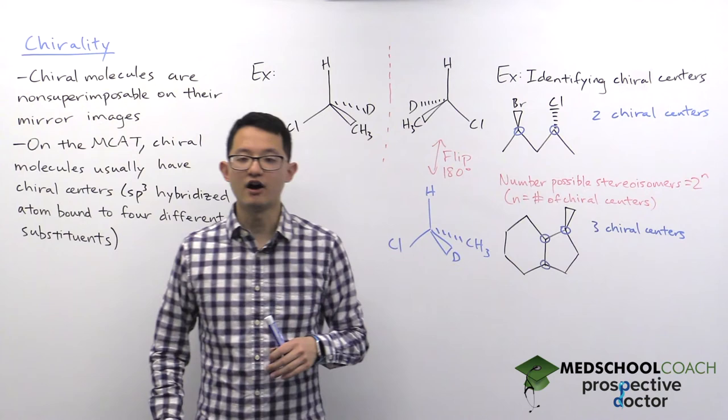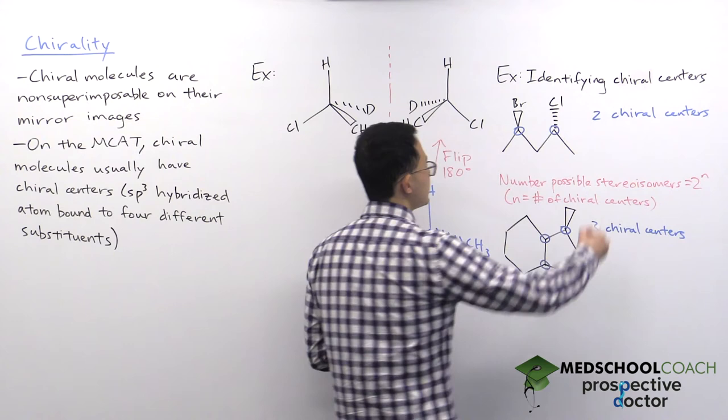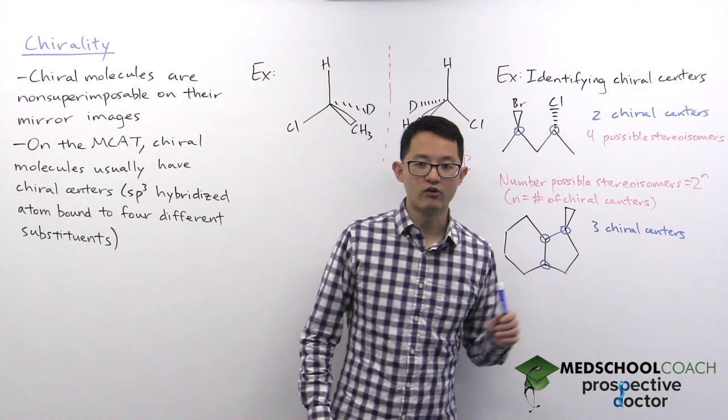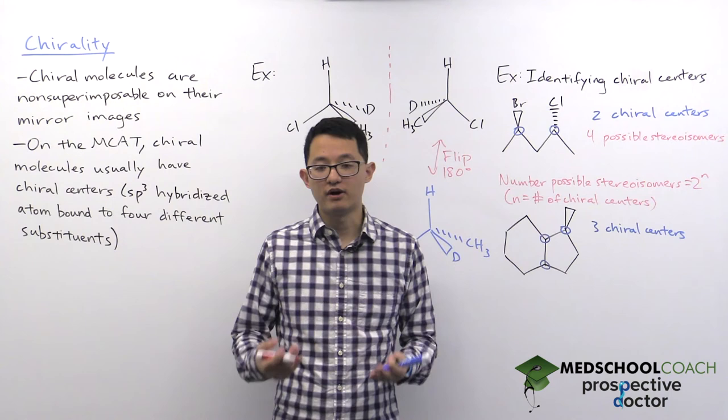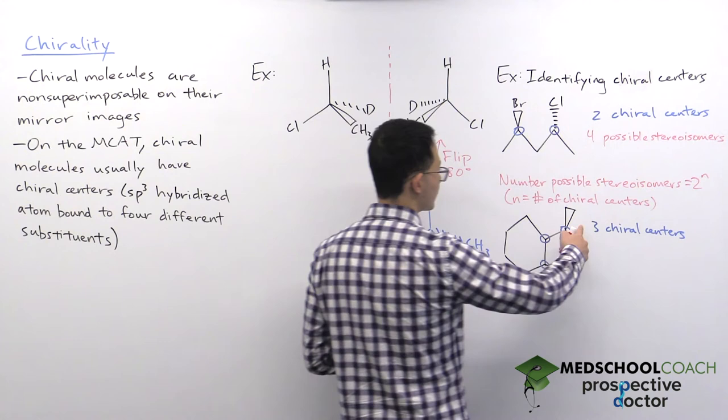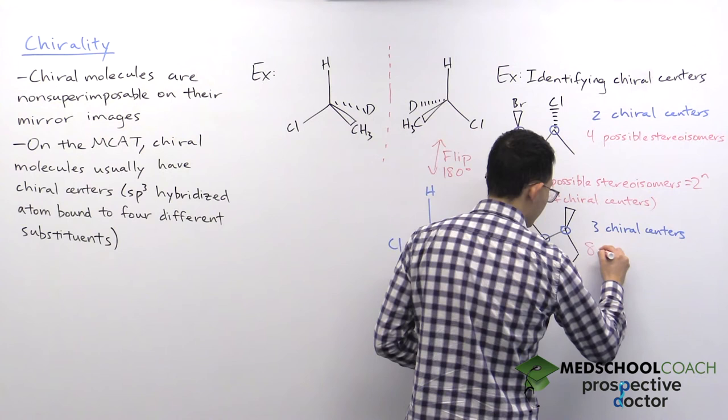So for instance, if we take a look at this molecule on the top, it has two chiral centers, and 2 to the power of 2 is 4, which means this molecule has four possible stereoisomers. And in this case, it does have four. We're going to talk about absolute configuration later, but this molecule's four possible stereoisomers are RR, SS, RS, and SR. That's four possible combinations. In this case, since we have three chiral centers, we have 2 to the power of 3, or 8 possible stereoisomers.